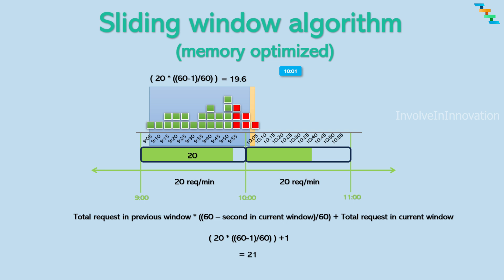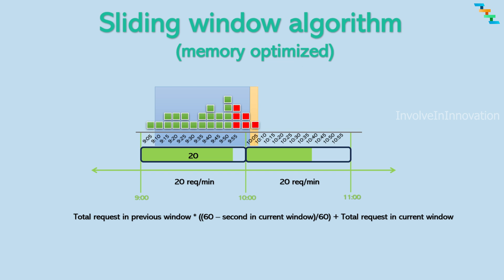So, 20 plus the current request count of 1 exceeds the limit, so we are rejecting the request with a 429 response code. Now, another request comes in at 10 minutes and 4 seconds.